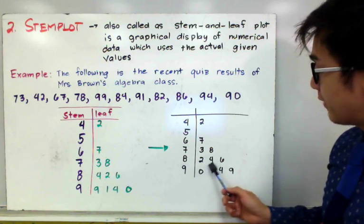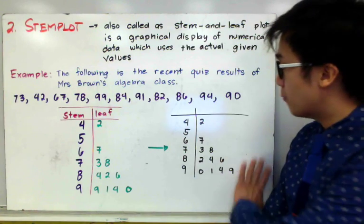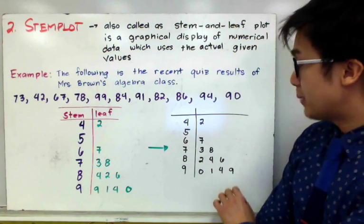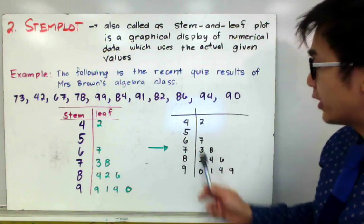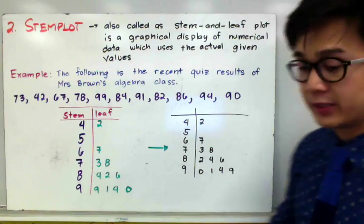But this time, my numerical values are now in increasing order, so it makes more descriptive if we arrange our numbers into orders similar to this one. Now let's have the second example on how to construct a stem plot on an ungrouped data set.